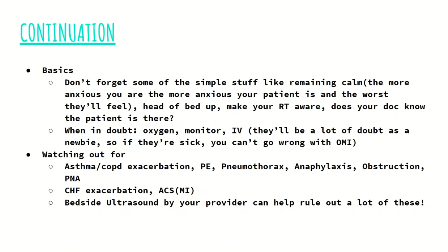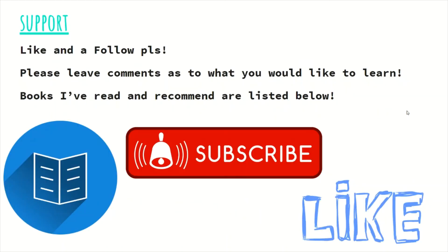As an ER nurse, some of the conditions you need to be watching out for include asthma and COPD exacerbations, PEs, pneumothorax, anaphylaxis, foreign body obstruction, pneumonia, CHF, and ACS — because cardiac and respiratory go hand in hand. Also know that bedside ultrasound by your provider can help rule out a lot of these conditions if you have someone skilled with the ultrasound.